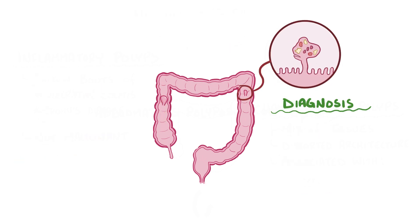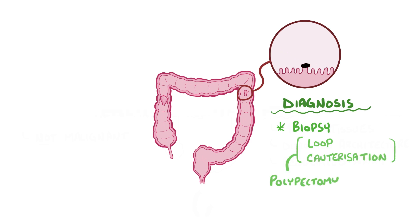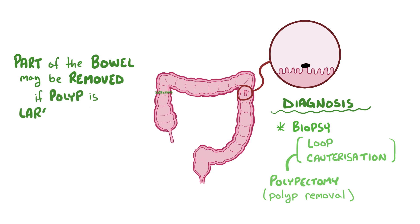A diagnosis of the type of polyp is done by biopsy, and treatment usually involves using a wire loop to cut out the polyp, followed by cauterization to prevent bleeding — a procedure called polypectomy, which literally means polyp removal. Part of the bowel may also need to be surgically removed if the polyp is particularly large, or if there are a lot of polyps in that section of the bowel.